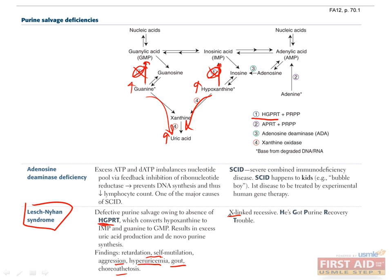HGPRT is on the X chromosome, so this is an X-linked recessive disease. And you can remember that this gene is involved in the purine salvage pathways if you use the mnemonic, he's got purine recovery trouble. How can you treat this? One commonly used drug is allopurinol, which inhibits xanthine oxidase here and here, and will decrease the amount of uric acid in the blood.